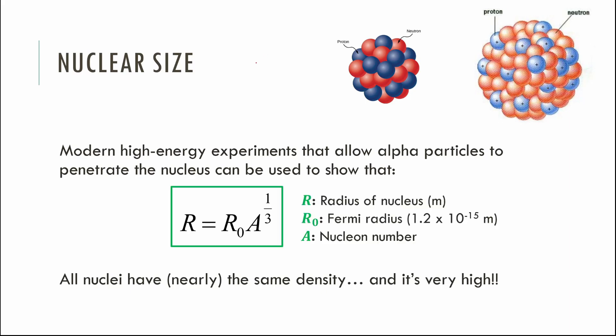There's another equation in the data booklet for nuclear size, derived from the high-energy Rutherford scattering work where alpha particles penetrate the nucleus. By doing that math, we get an equation for the radius of a nucleus depending on how many nucleons (total protons and neutrons) are in it. You take the Fermi radius constant R₀ (from the front of your data booklet) and the equation is: R = R₀ · A^(1/3), where A is the nucleon number — that's the cube root of A.